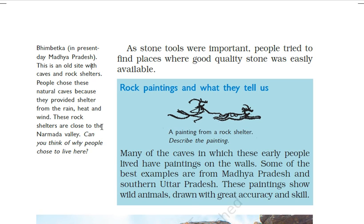Can you think of why people chose to live here near the Narmada Valley? As Bhimbetka is a paleolithic site where hunter and gatherers started to live, think about why ancient cities started building on the banks of rivers. Comment your views on why people chose to live near the Narmada Valley.